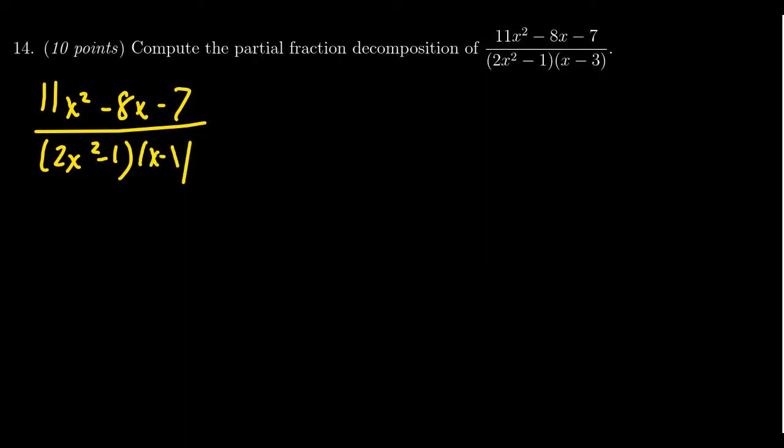In which case, looking at the denominator, we're going to have something like the following. The 2x squared minus 1, it's a quadratic. So the denominator could be 2x squared minus 1, and the numerator would be then some ax plus b.